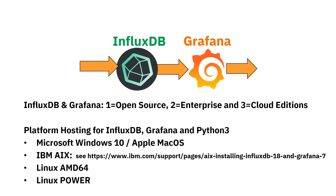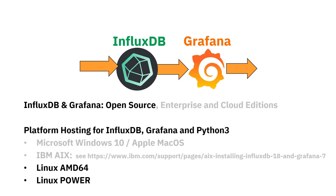If you're interested in running the enterprise version on Power, phone them up, complain, email them. Say you want to spend money on their product if they only support Power — if we get two dozen people phoning up wanting to give them money, they may change that decision. InfluxDB and Grafana will run on Windows 10 or Apple Mac, but I regard those as personal computers; if you shut down your personal computer overnight, the stats will get lost. It also runs on AIX — there's a long article on my AIXpert blog on how to install it there. In this video, we're going to cover the open source version, installed on Linux on AMD64 and Linux on Power.